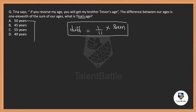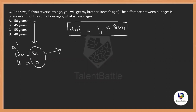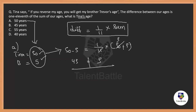Suppose Tina is 50 years — let's choose option A. If Tina is 50, her brother's age should be 05, which is 5 years. The difference between 50 and 5 is 45. This should equal one-eleventh of their sum: one-eleventh of 55 is 5. Since 45 is not equal to 5, this expression does not satisfy the condition, so Tina's age of 50 years is wrong.